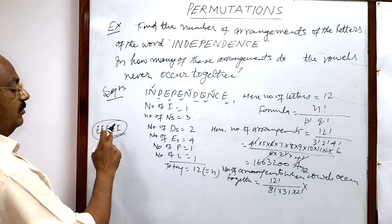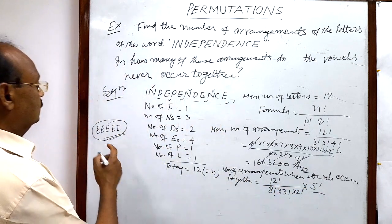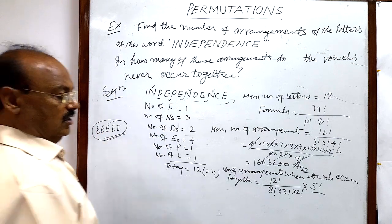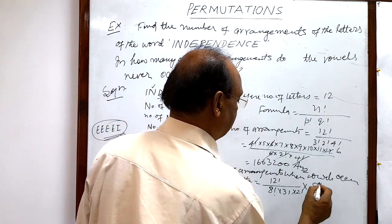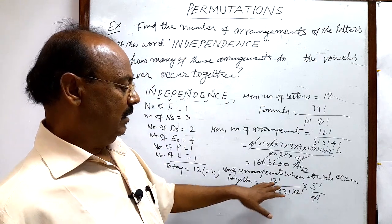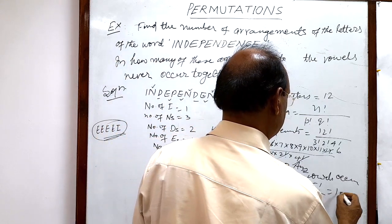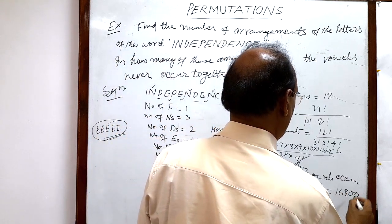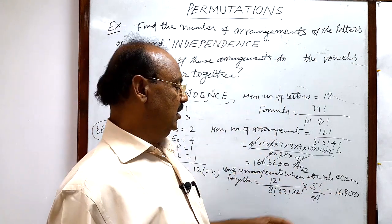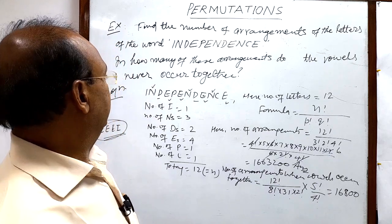Within the group of five vowels — one I and four E's — there is also scope for internal arrangements: five factorial divided by four factorial, since the four E's are alike. After simplification, the number of arrangements when all vowels come together equals 16,800.